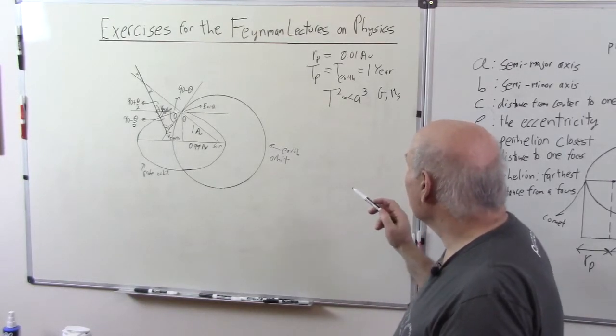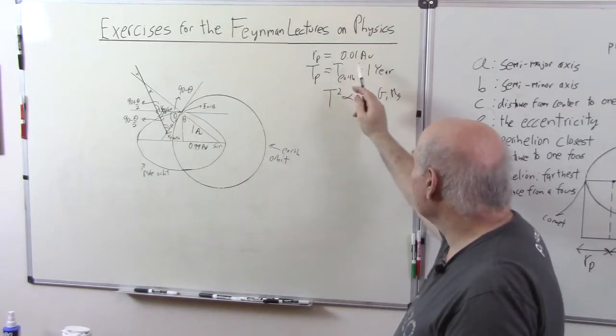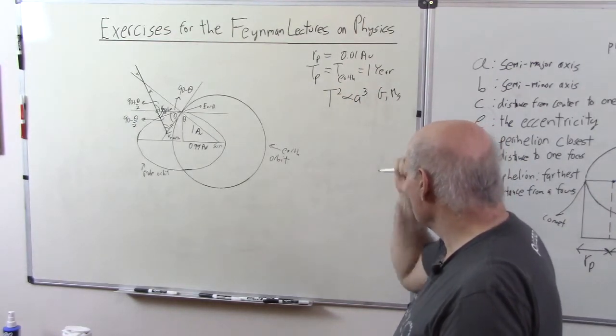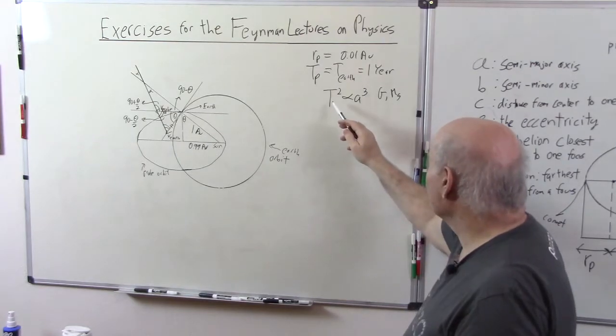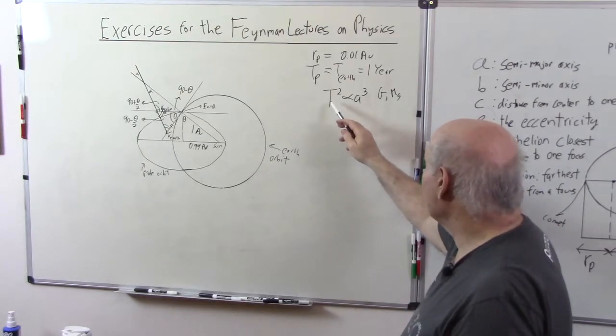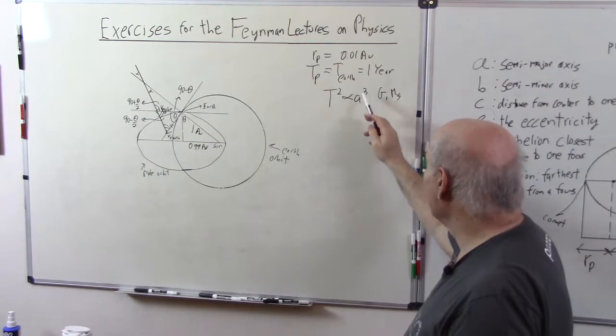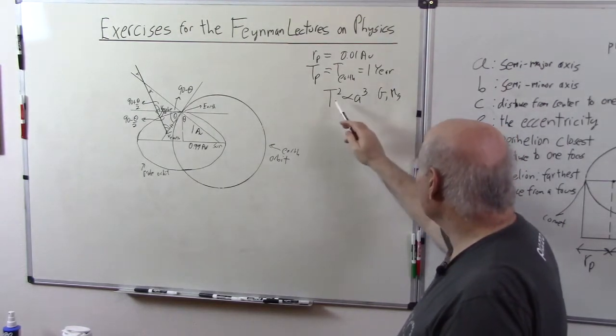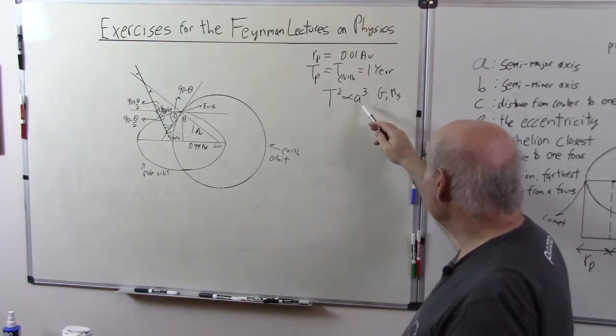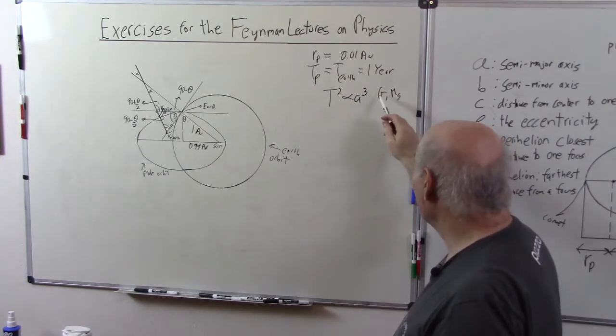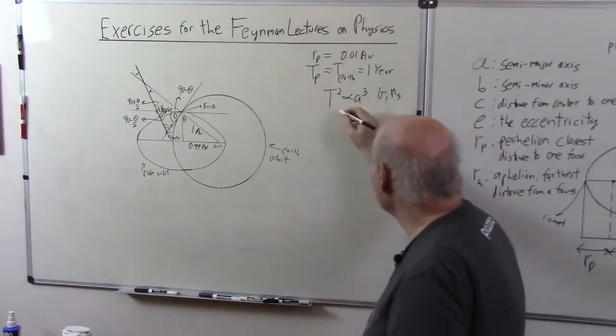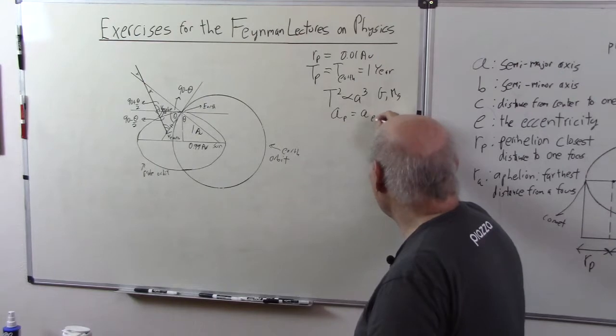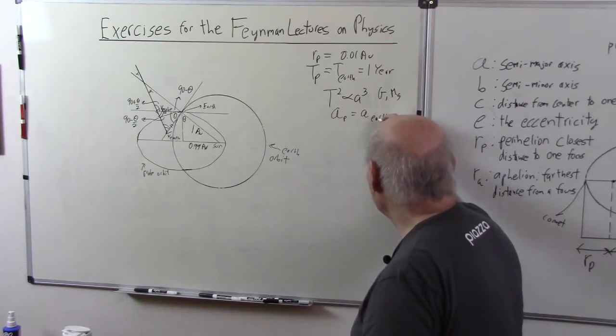So we're given that we have the perihelion of the probe which is one hundredth of an AU. And the probe and the Earth have the same period. This is useful because we have from Kepler's law T squared is proportional to A cubed. We know T is the same therefore A has to be the same because the gravity and the mass of the sun are the same constants. So A of the probe is equal to A of the Earth and this will help us a lot.